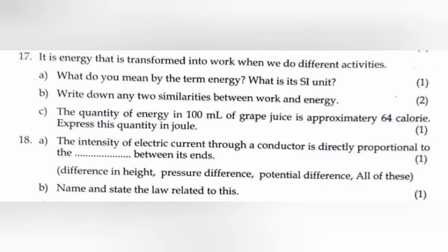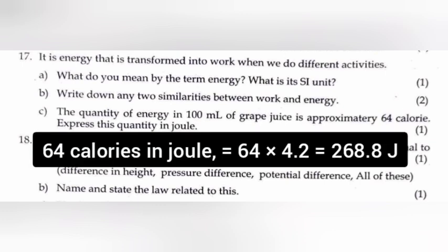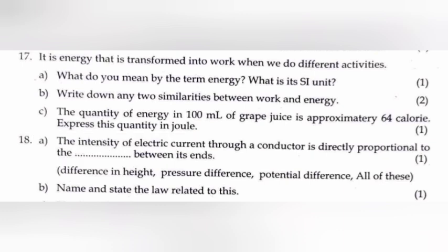C: The quantity of energy in 100 ml of grape juice is approximately 64 calories. Express this quantity in Joule. Answer: 64 calories in Joule equal 64 into 4.2 equal 268.8 Joule.